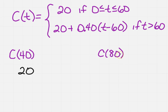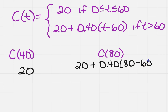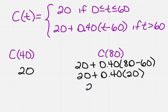Now for C of 80 — it's going to have to be the other one, since 80 is greater than 60. So I'm going to take the function 20 plus 0.40 times, and my t is 80 minus 60. Solving this, you get 20 plus 8, and so your answer is going to be 28.